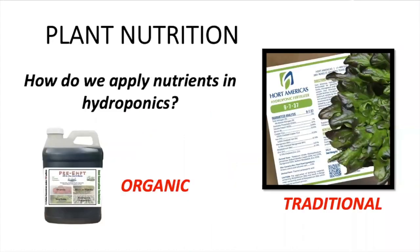But how do we apply these nutrients in hydroponics? There are two general ways to do it. We can do it with traditional hydroponics, which uses chemical compounds to provide nutrition to our crops, and organic hydroponic fertilizers, which are based on nutrients derived from organic plant or animal material, or natural mined compounds.